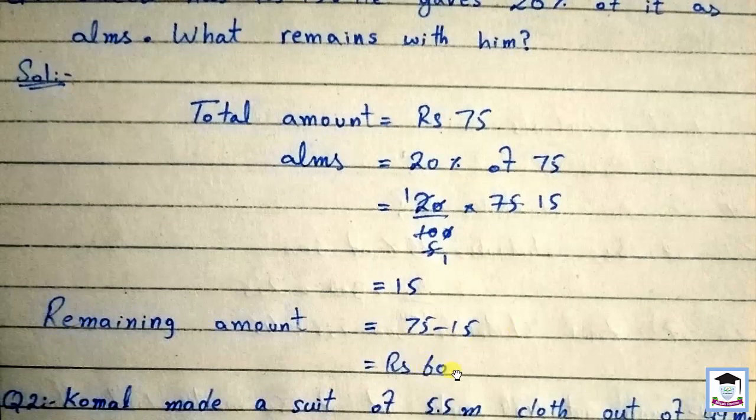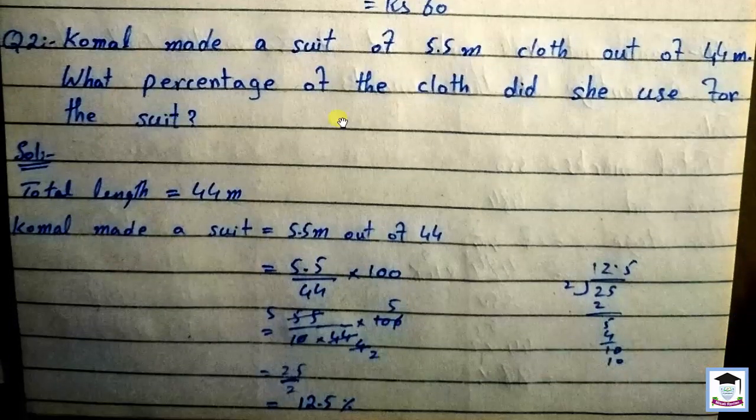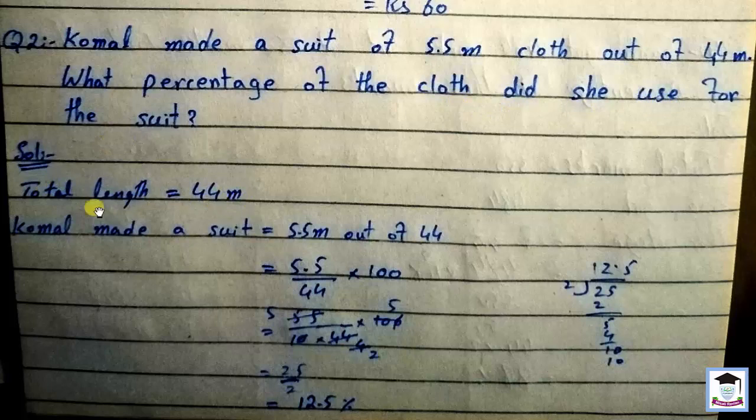Second part: Komal made a suit of 5.5 meter cloth out of 44 meter. What percentage of the cloth did she use for the suit? Total length is 44 meter. Komal made a suit of 5.5 meter out of 44.